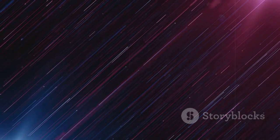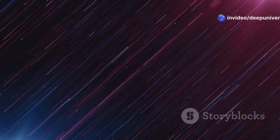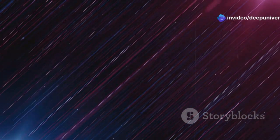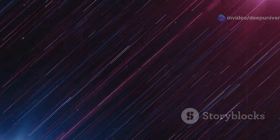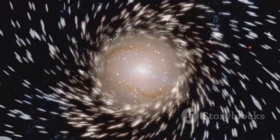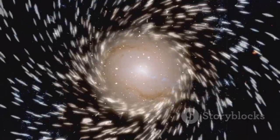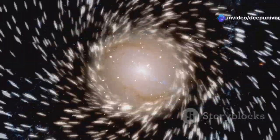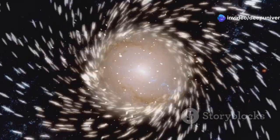Imagine traveling at the speed of light, which is about 186,000 miles per second. At this incredible speed you could circle the Earth 7.5 times in just one second. Even at that speed it would take 2.5 million years to reach Andromeda. This gives us a sense of the immense scale of the universe and the vast distances between celestial objects.